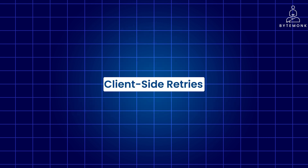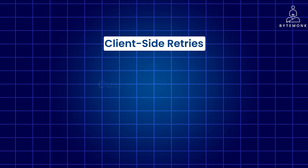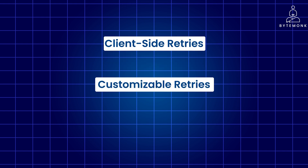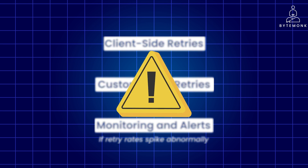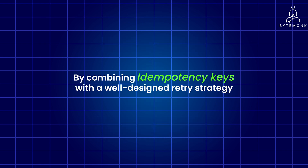Some additional considerations: PayPal's SDK might also incorporate retry mechanisms on the client side — for example, in the merchant's website or app — to complement PayPal's internal server-side retries. PayPal might also offer merchants some level of control over retry settings, such as maximum retries or backoff intervals, through their API or developer tools. PayPal continuously monitors retry patterns to identify potential issues with their systems or integrations. If retry rates spike abnormally, it might trigger alerts for investigation. By combining idempotency keys with a well-designed retry strategy, PayPal strikes a balance between ensuring payment success and preventing duplicate transactions, even in the face of transient failures.